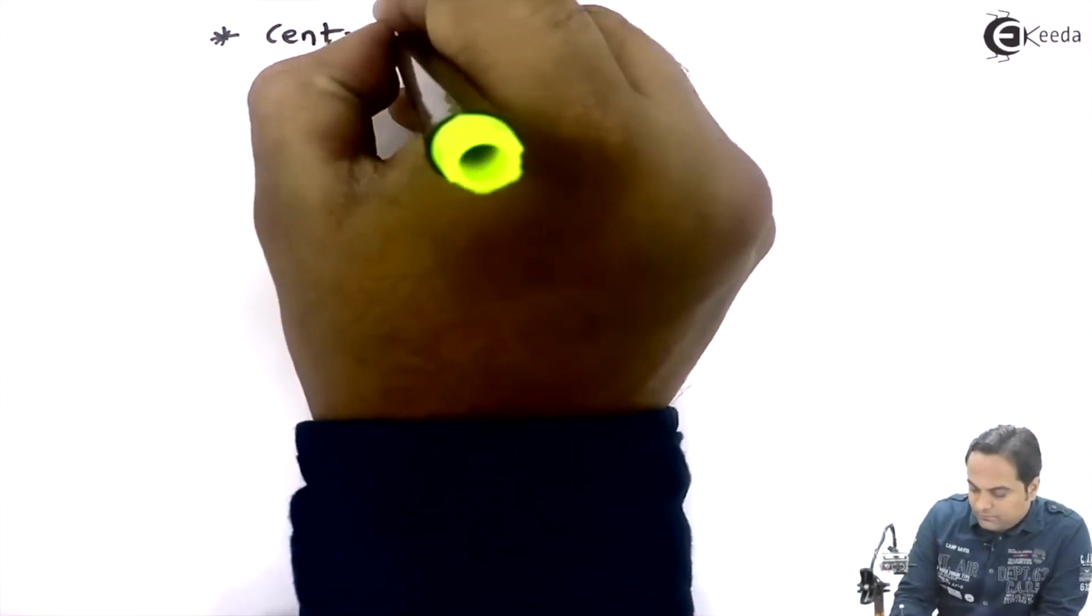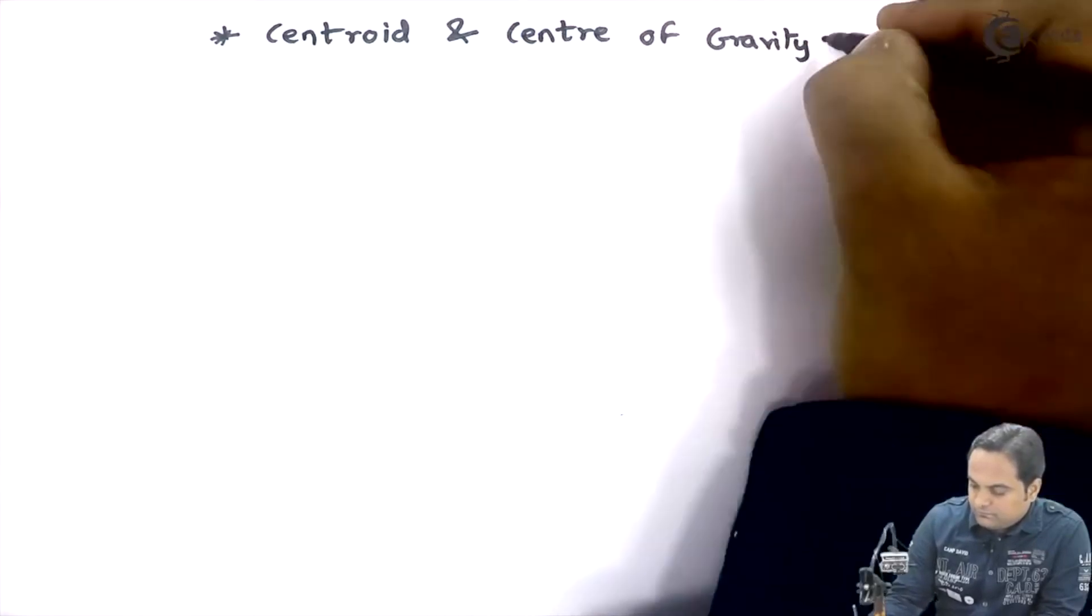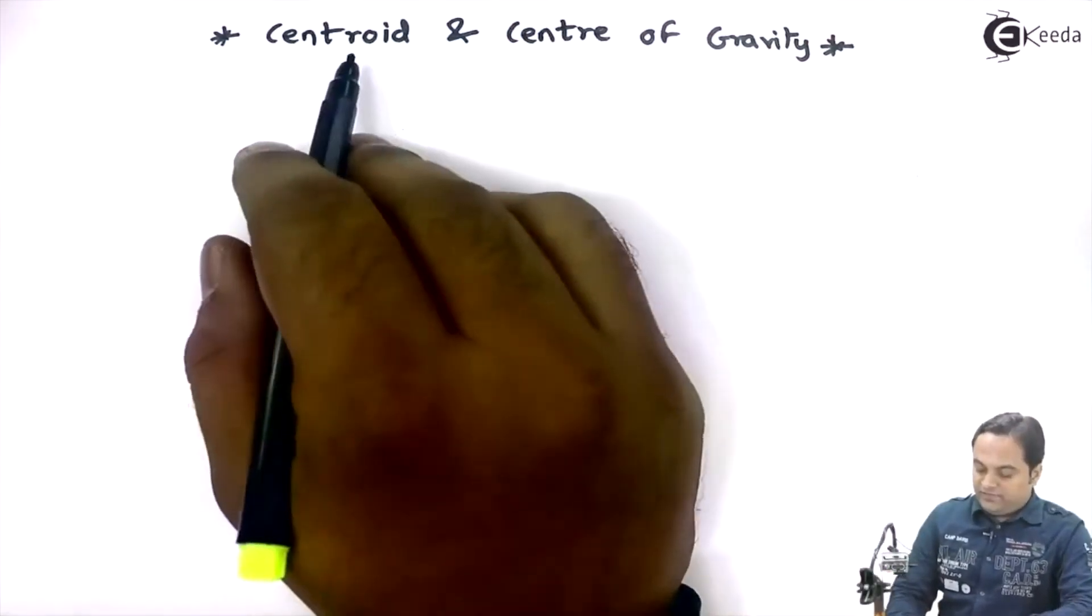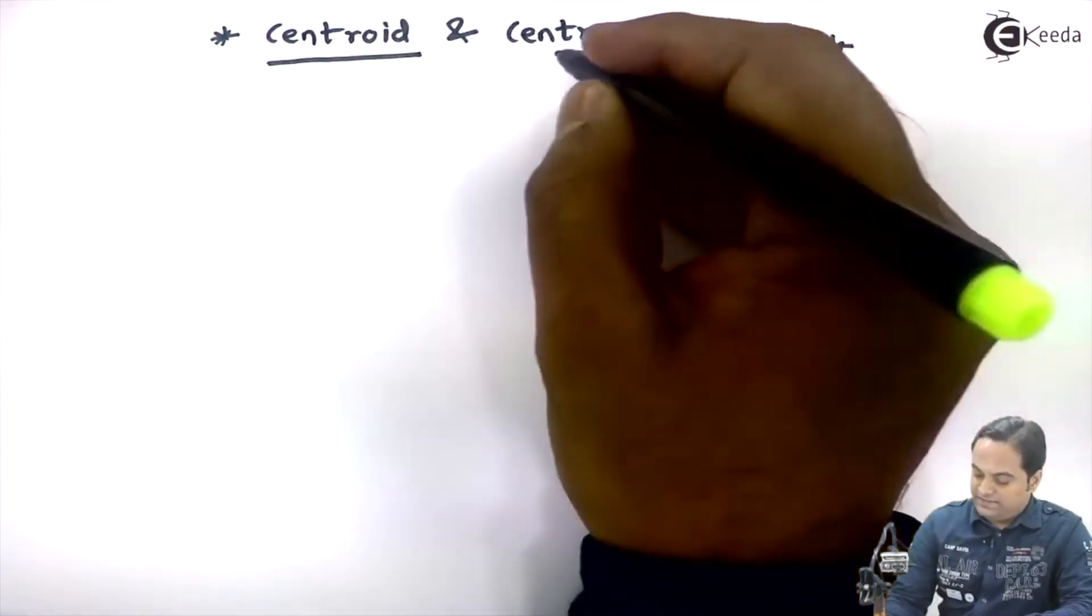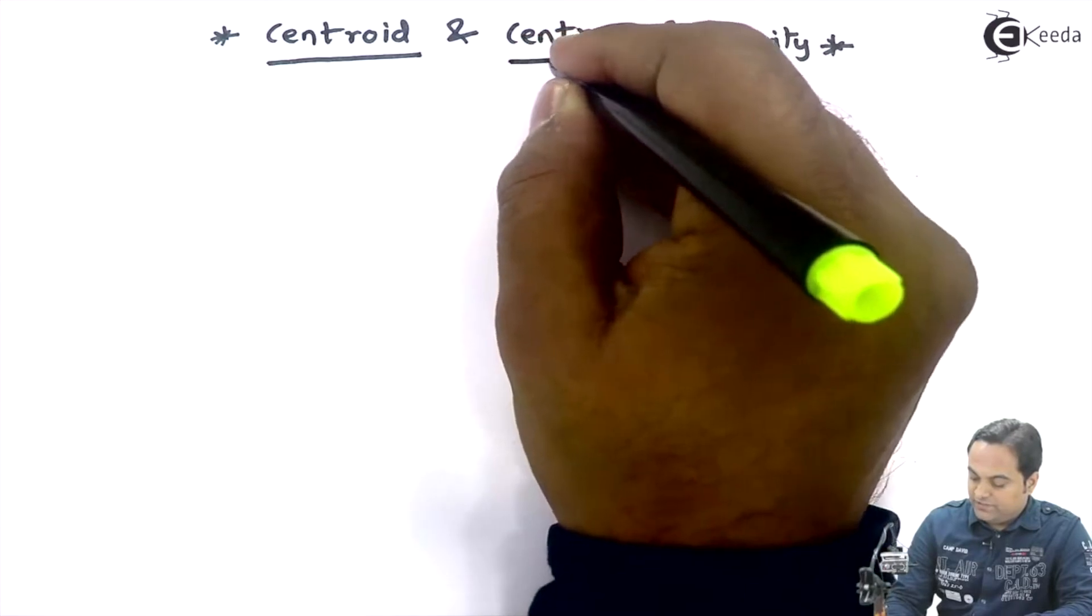Let us take the new chapter in mechanics. The name of the chapter is centroid and center of gravity. Here we have the first part is centroid and the second part of the chapter is center of gravity.